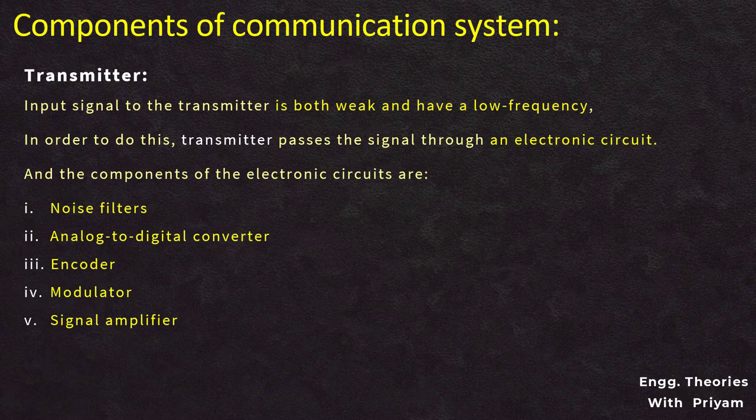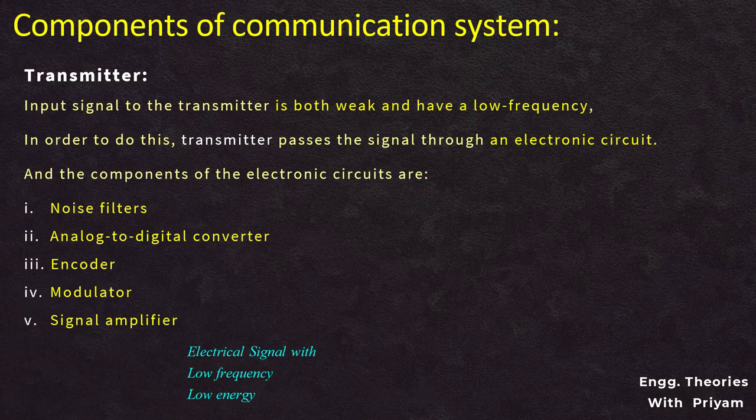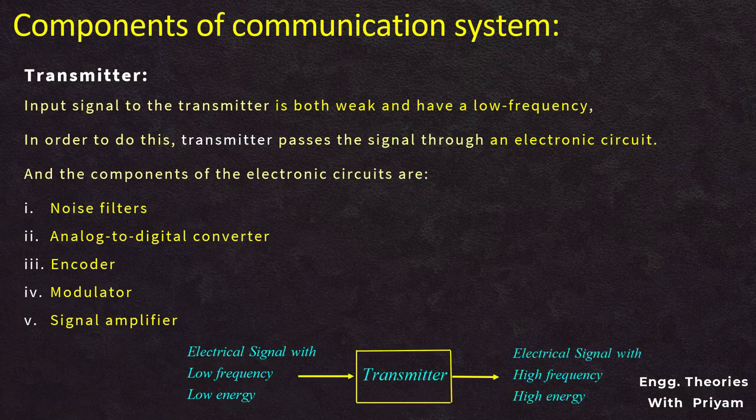The noise filter eliminates noise. Using an ADC converter, the signal is converted from analog to digital. An encoder is used to encode the input signal. The modulator converts the low frequency signal to a high frequency signal, and after passing the signal through the amplifier, the signal will be amplified and ready for transmission. At the end of the transmitter block, there is an antenna from where the signal is released as electromagnetic waves. So the transmitter converts the electrical signal into high frequency, high energy electromagnetic waves. The input signal to the transmitter is a low frequency, low energy electrical signal, and the output signal is a high frequency, high energy electrical signal.